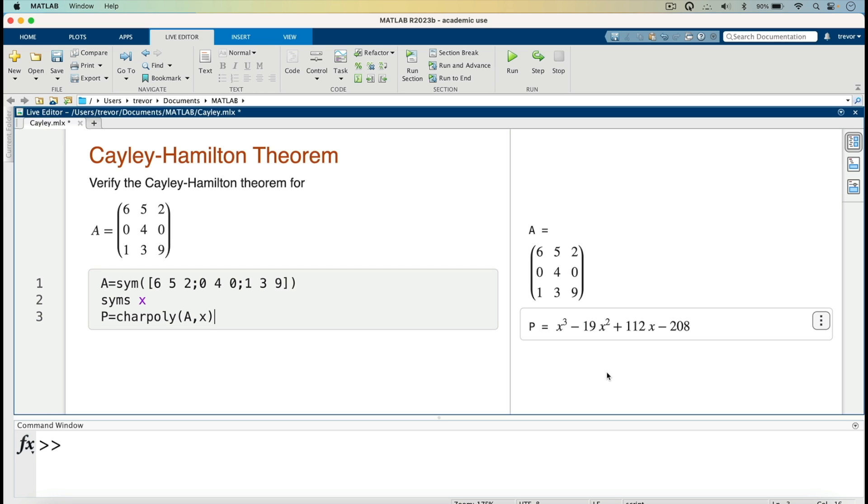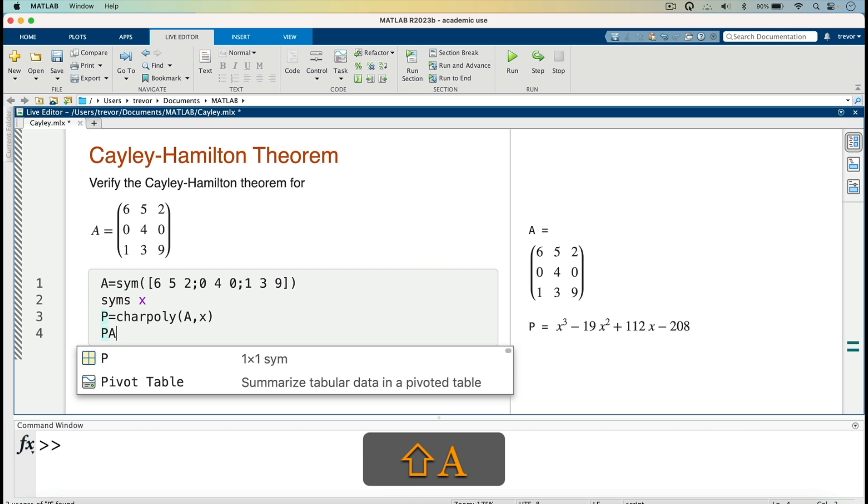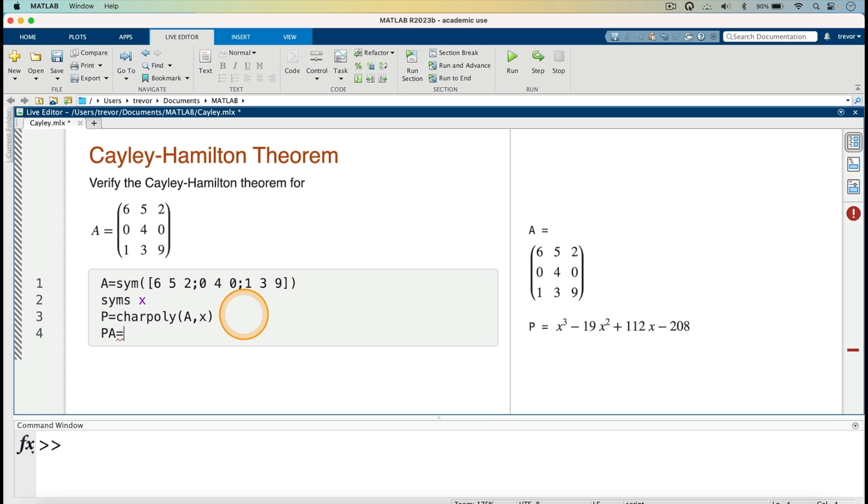So the next step is to evaluate the characteristic polynomial after we have substituted this matrix A. So wherever we are having the x here, we are now putting the A. So I will call this one PA, substituting A into the characteristic polynomial P that we have just evaluated here.